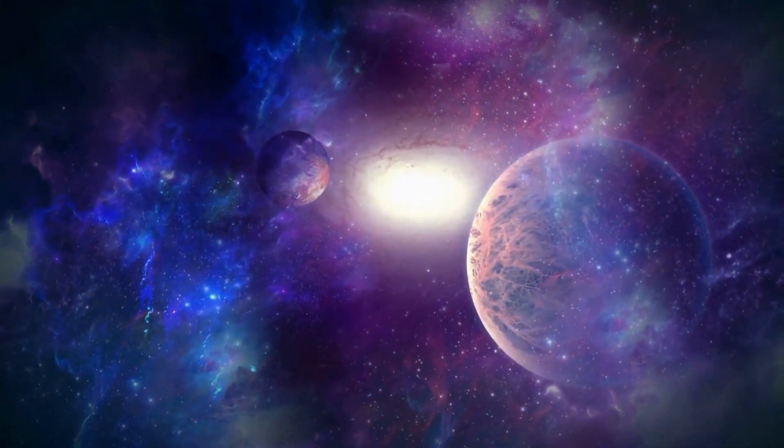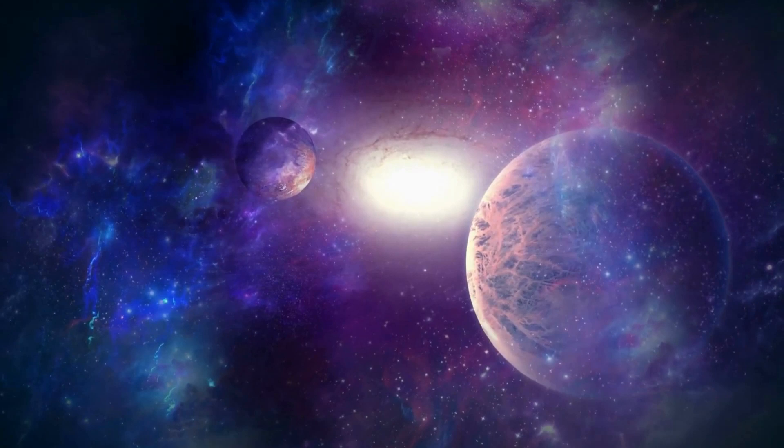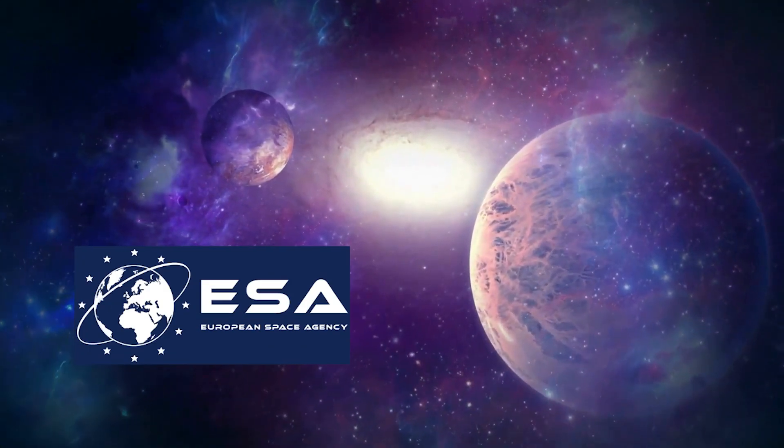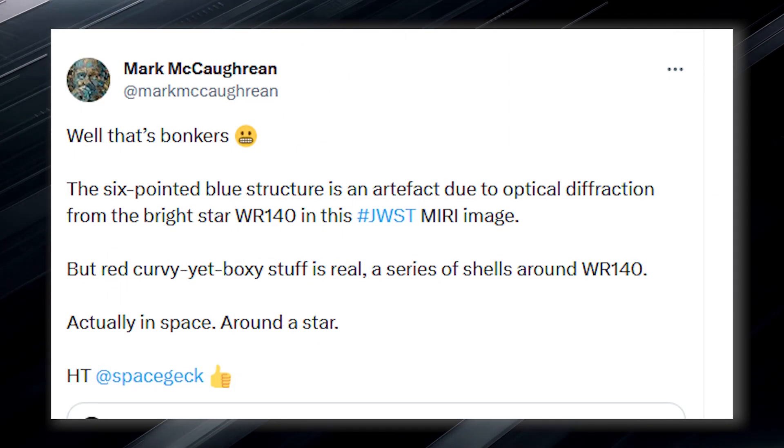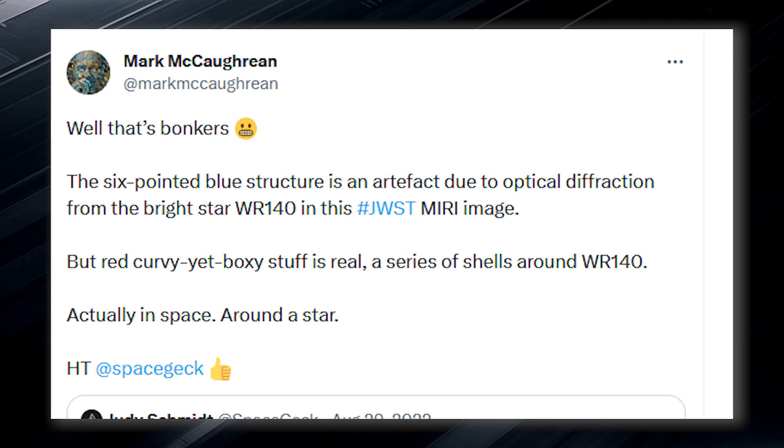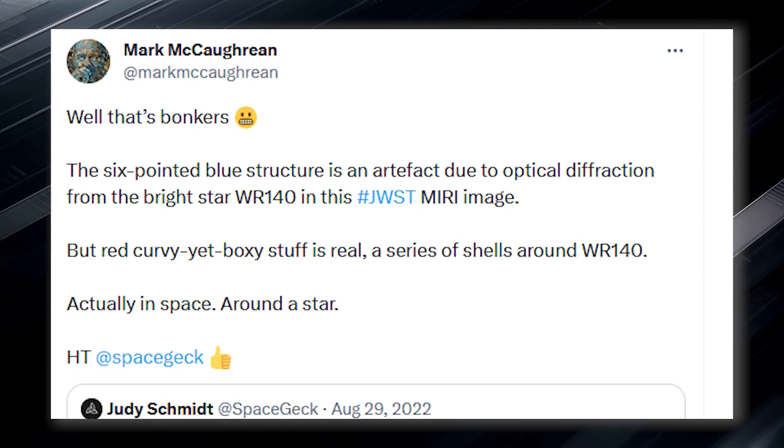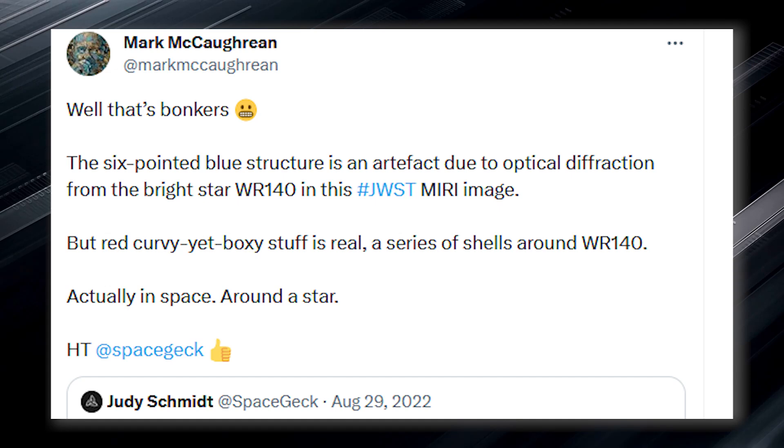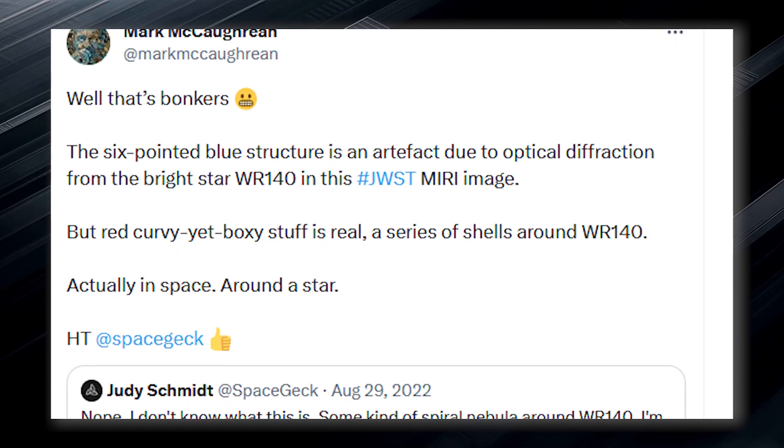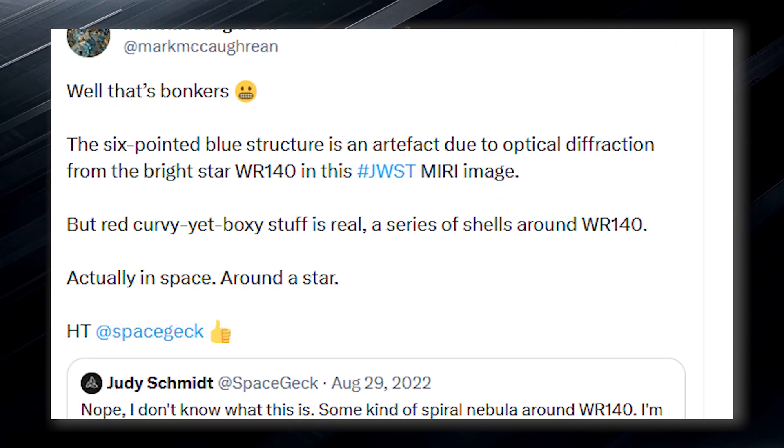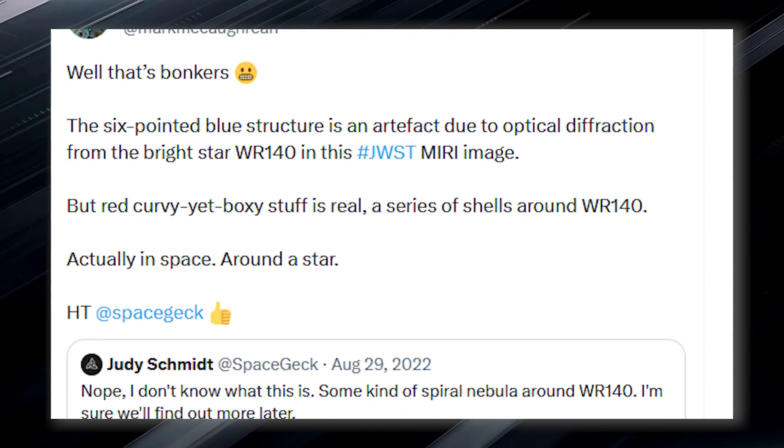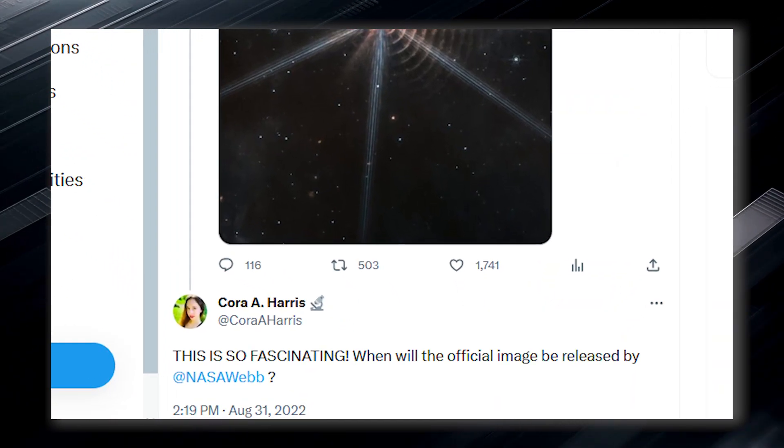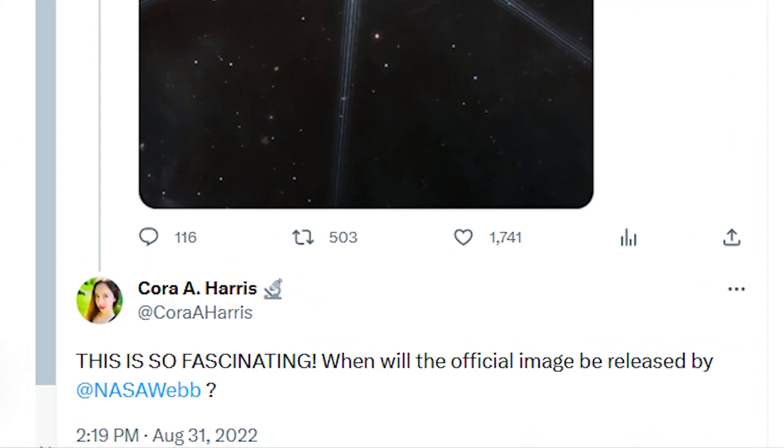Mark McCaughrean, an interdisciplinary scientist with JWST Science Working Group and a science advisor to the European Space Agency, called the feature wacky in a Twitter thread. He explained that the six-pointed blue structure is an artifact due to optical diffraction from the bright star WR 140 in the image. However, he noted that the red curvature is real and represents a series of shells around WR 140 in space. Although NASA is expected to have something to say about this, it is expected to make a statement soon.